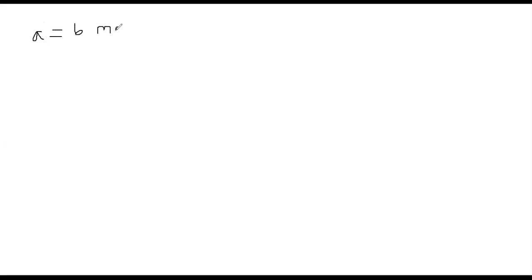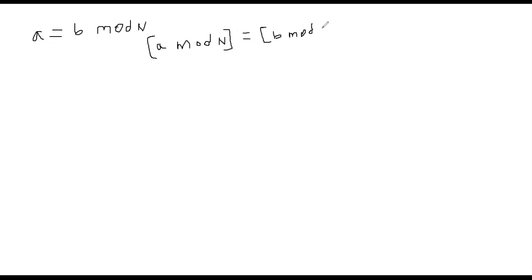Welcome back. In this segment I want to talk about modular arithmetic and some basic properties we should be aware of in the context of cryptography. We learned the basics in the previous segment. Let me quickly recall the core idea: we say a is congruent to b, written a ≡ b (mod n), where n is an integer greater than one. We say a is congruent to b if a mod n is the same as b mod n — meaning you divide a by n and get a remainder, and that remainder equals the remainder you get by dividing b by n.